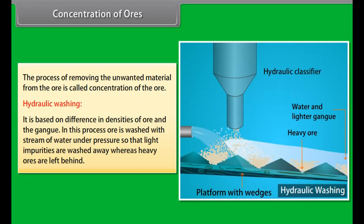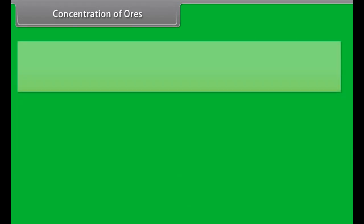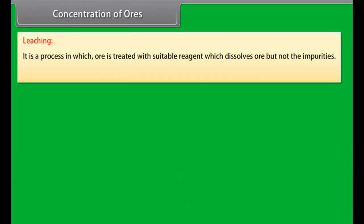Hydraulic washing: It is based on difference in densities of ore and the gang. In this process, ore is washed with stream of water under pressure so that light impurities are washed away whereas heavy ores are left behind.